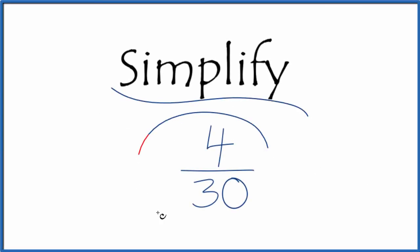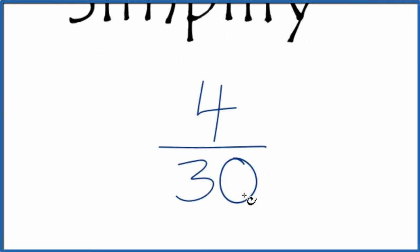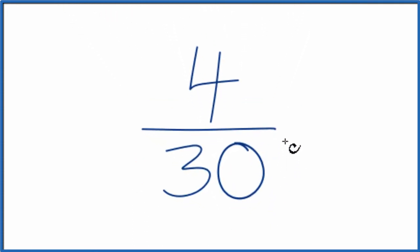Let's simplify the fraction 4 thirtieths. What we're trying to do here, we have 4 over 30. We want to get this so we have a fraction that has the same value, an equivalent fraction, but we want it in lowest terms.